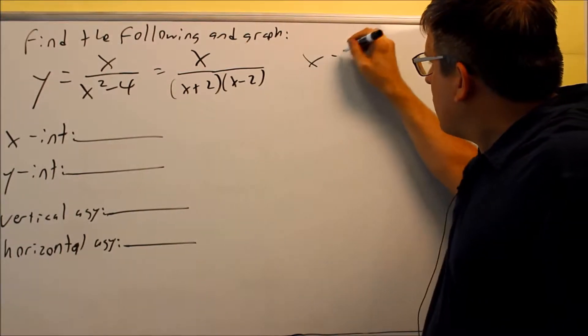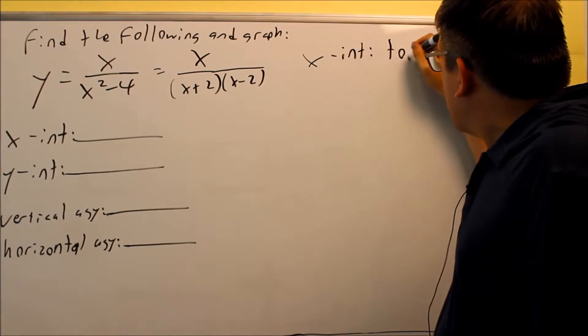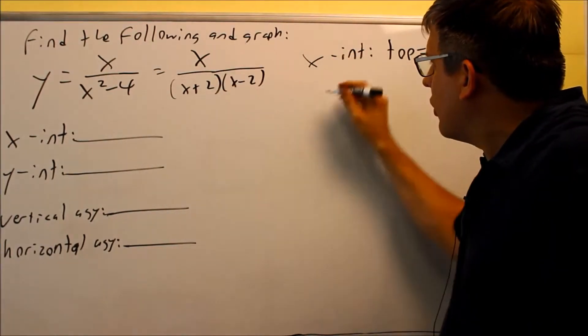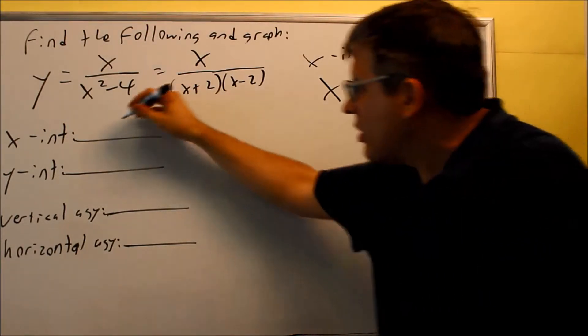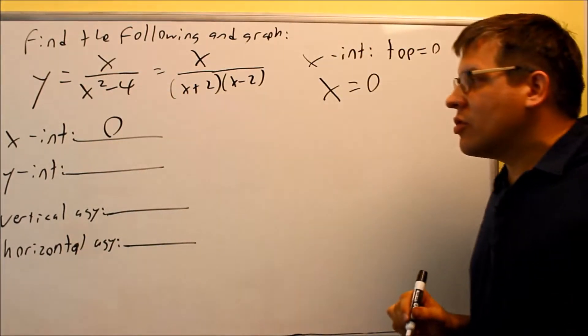If we do X-intercept, X-intercept means you're going to take the top part, set it equal to 0. Now, in this case, the only thing we have on top is X, so we just set X equal to 0. That's it. So it means that the X-intercept is going to be 0.